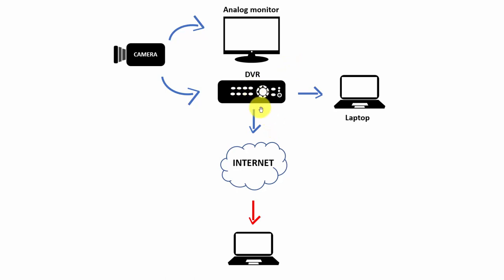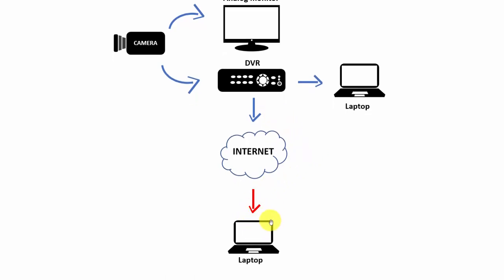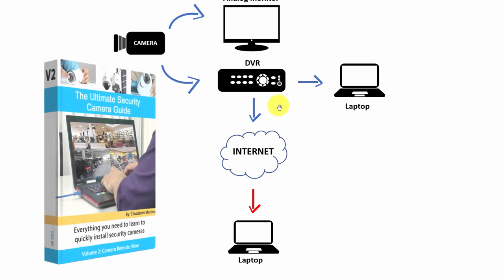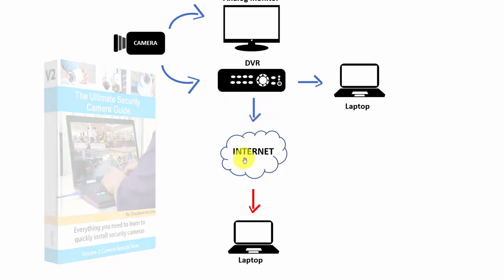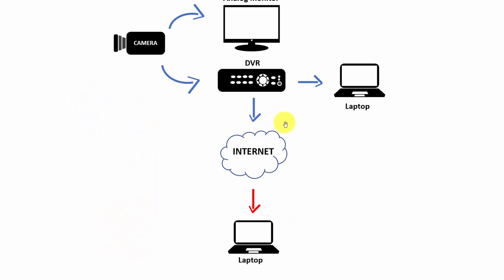Then you can connect your system to the internet. You're going to need a router — connect your DVR to a router, and from that router you connect to the internet. Any laptop, computer, cell phone, or tablet — as long as you have an internet connection — you can have access to your DVR. There are more details in other guides, for example Guide Version 2 (link in the description), which covers DVR connecting to the internet and IP cameras connecting to the internet so you can watch remotely.